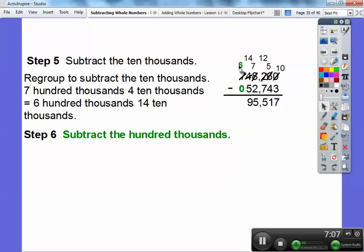Now I can do 140,000 minus 50,000, which is 90,000. Then I can subtract the hundred thousands. 600,000 minus 0 is just 600,000. There you go. The answer is 695,517.